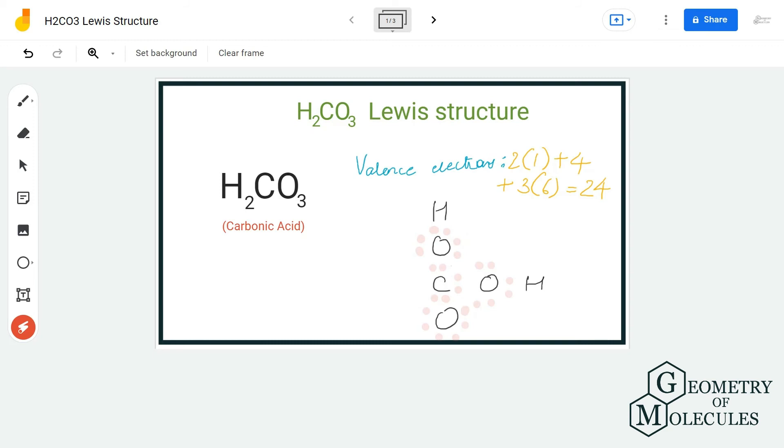But when you look at this carbon atom, it doesn't have a complete octet - it just has six valence electrons. So to help this carbon atom have a complete octet...